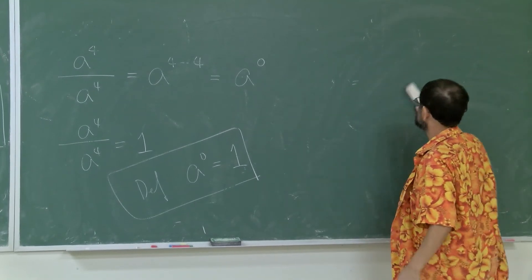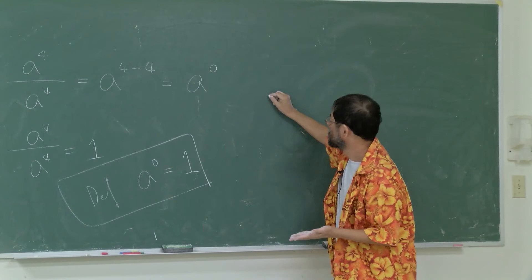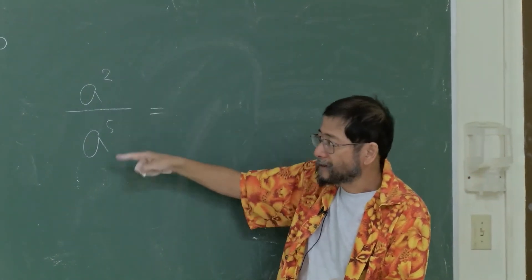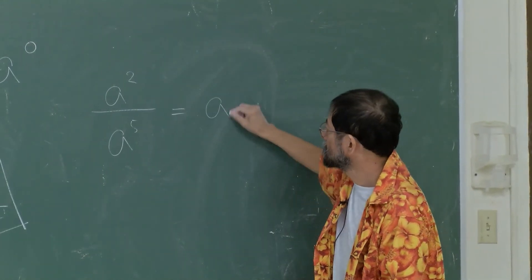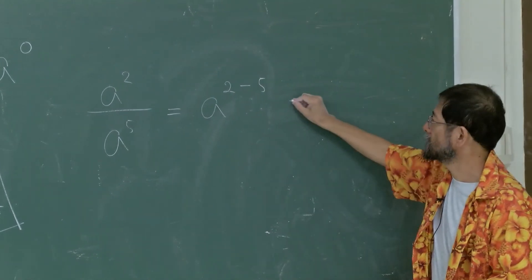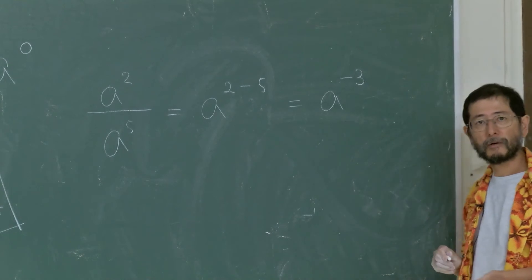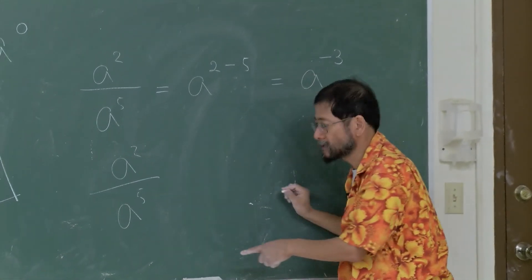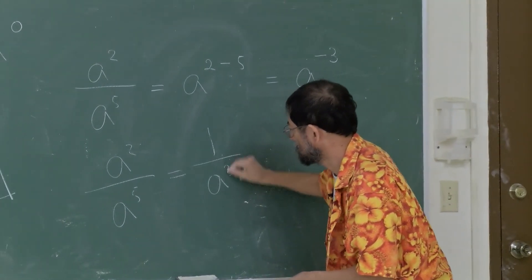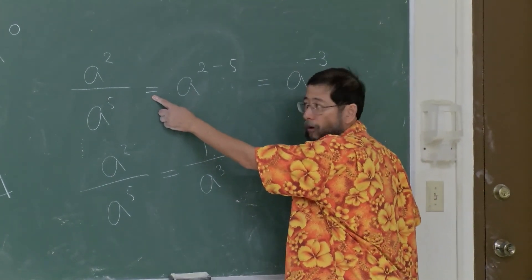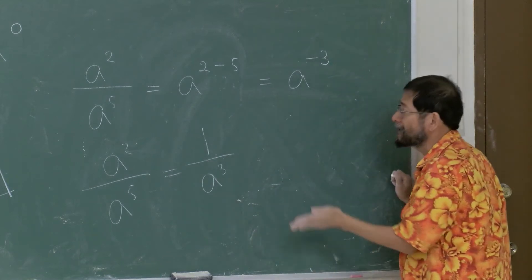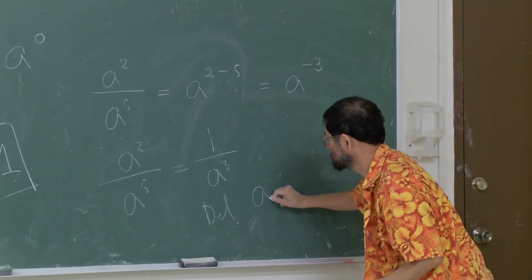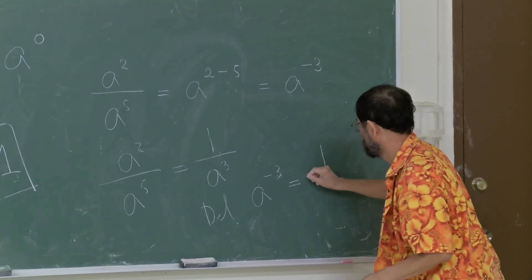You can even extend this to negative exponents. If you formally apply the exponent rule with m equals 2 and n equals 5, you get a raised to 2 minus 5, which is a raised to negative 3. On the other hand, looking at the original meaning, you can cancel a squared from both, so this equals 1 over a cubed. So if we want this rule to hold for negative exponents, we must define a raised to negative 3 as equal to 1 over a cubed.